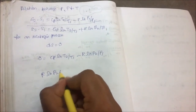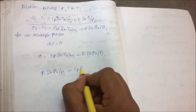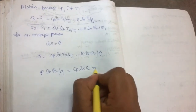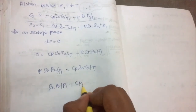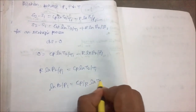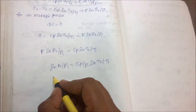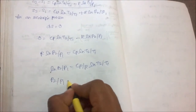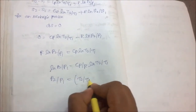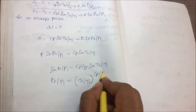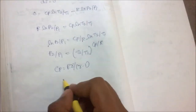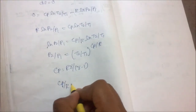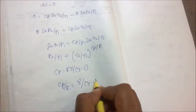Rearranging, R ln(P2/P1) equals Cp ln(T2/T1), which gives ln(P2/P1) equals (Cp/R) ln(T2/T1). Taking the antilog of both sides, P2/P1 equals (T2/T1) to the power of Cp/R. Since Cp equals R·γ/(γ−1), we get Cp/R equals γ/(γ−1). Therefore P2/P1 equals (T2/T1) to the power of γ/(γ−1).